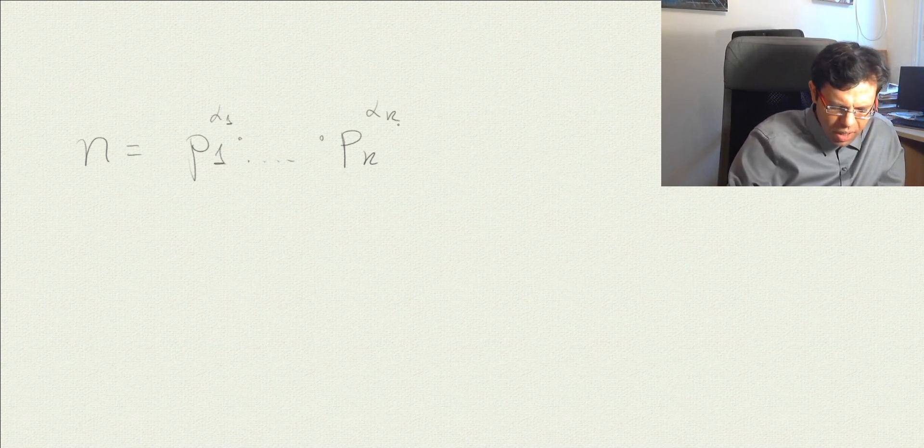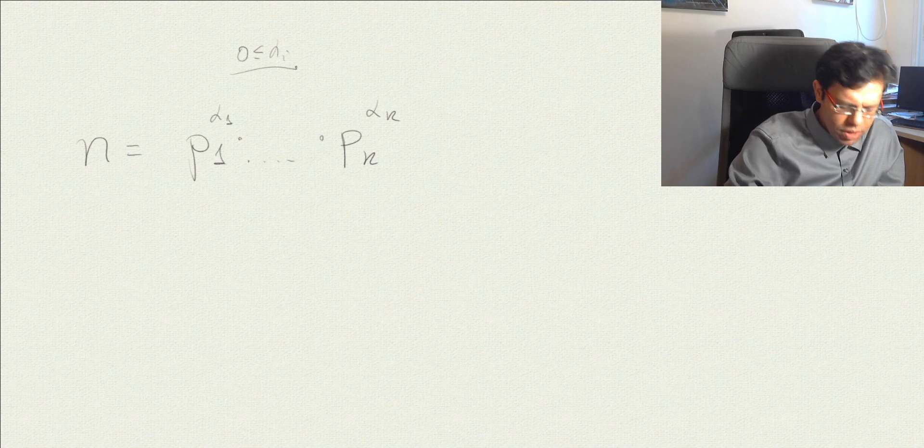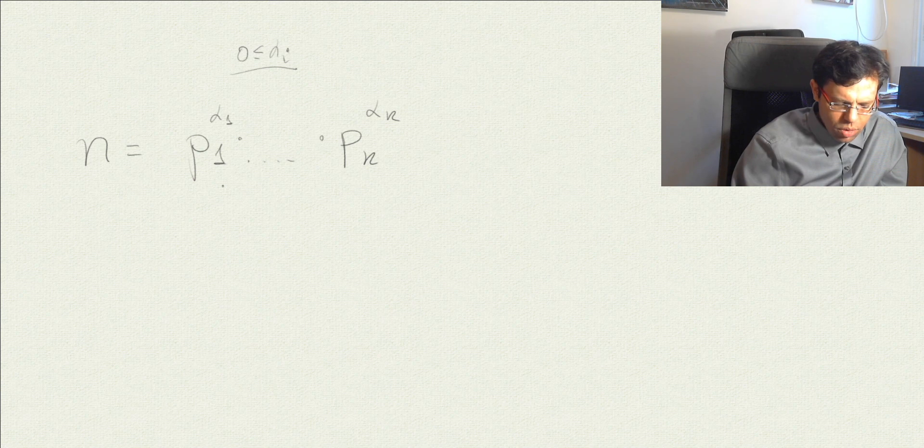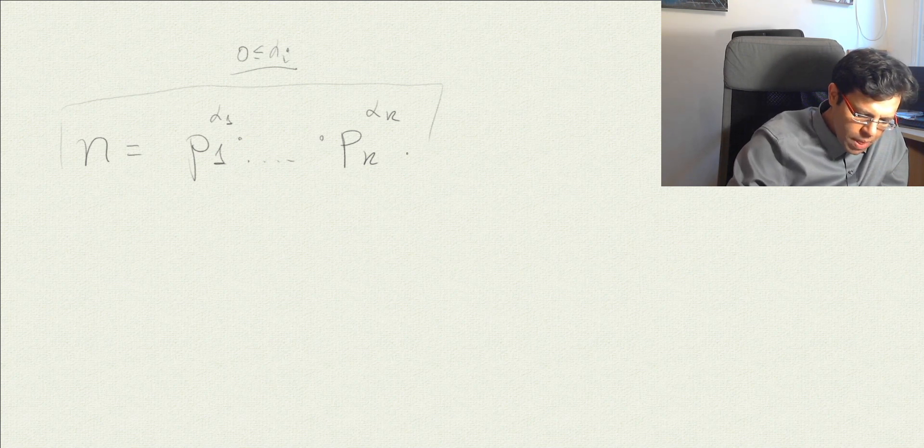p1 to the power of alpha 1, those are integers, up to pk to the power of alpha k. The alphas are greater or equal to 0, and they could be 0. If alpha i is 0, this means that the i-th prime does not appear in the factorization of n. This is unique up to the order of the factors. If we choose to order them from smaller to bigger one, then this factorization is indeed unique.